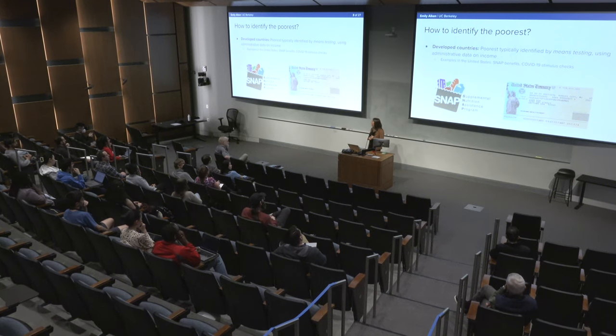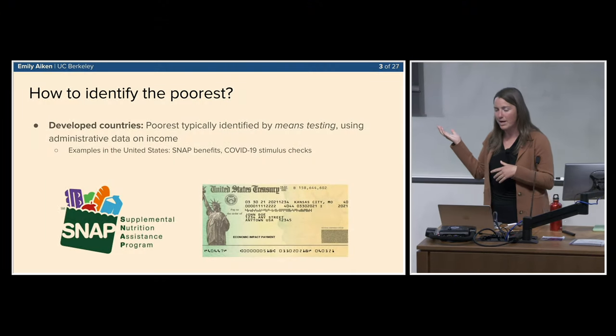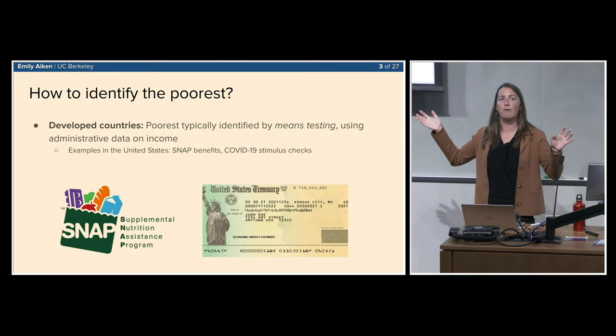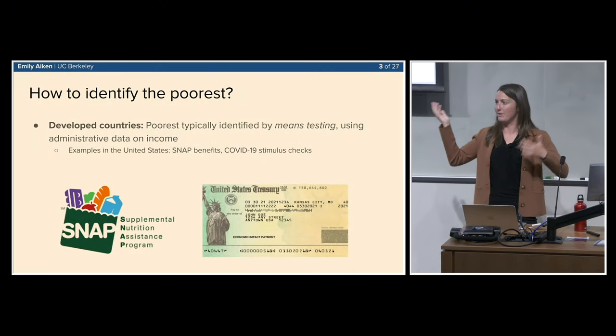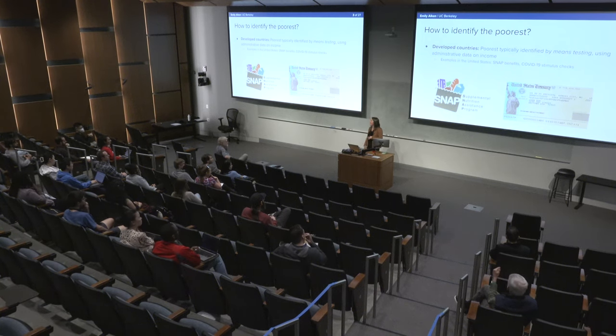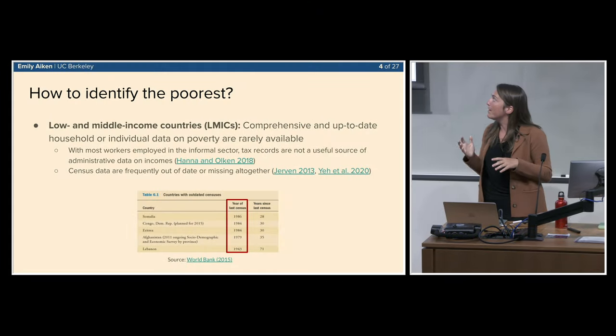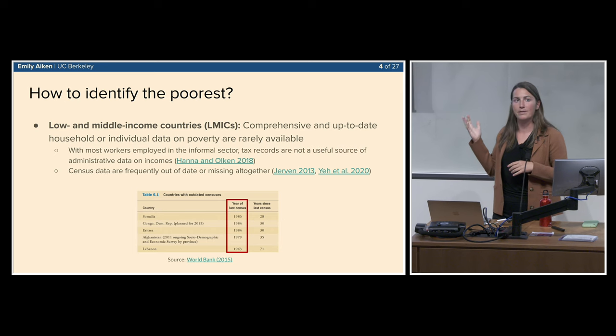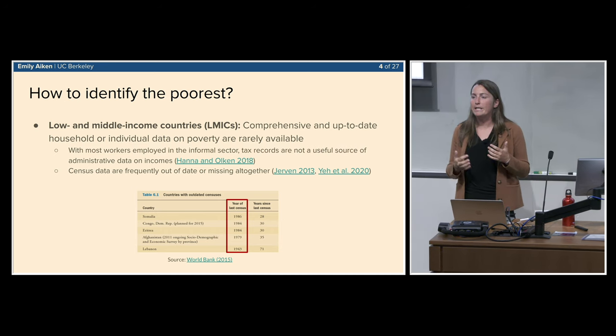In developed countries — the US and much of Europe — this is typically done through means testing, using administrative data on income to identify who should be eligible for benefits. A good example is the stimulus check program in the US: they looked at tax returns from the previous year, and households with income below a certain level were eligible. That works pretty well, though not perfectly.